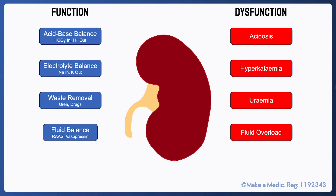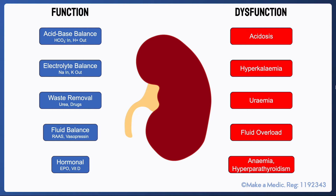Finally, the kidneys also have several important endocrine roles. They are the site of production of erythropoietin, which stimulates red blood cell production in the bone marrow. Furthermore, they are the site of activation of vitamin D, and hence are involved in calcium homeostasis. A loss of these functions can result in anaemia and secondary and tertiary hyperparathyroidism.